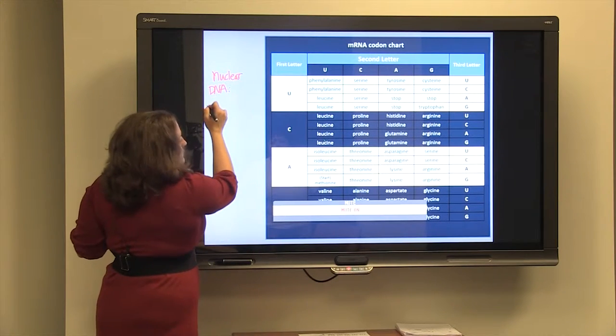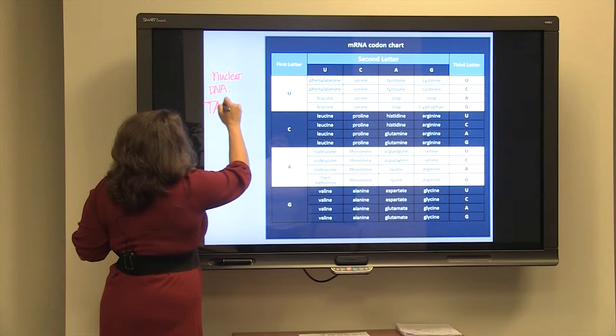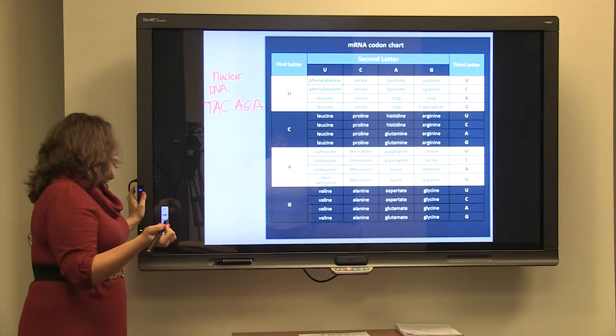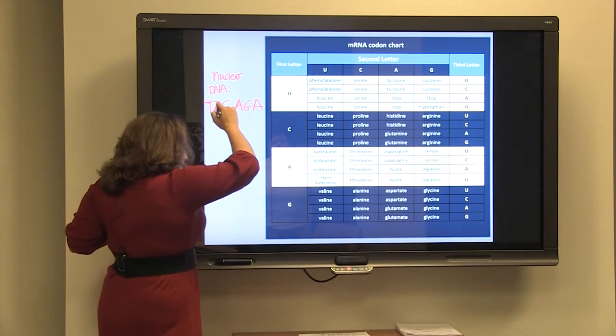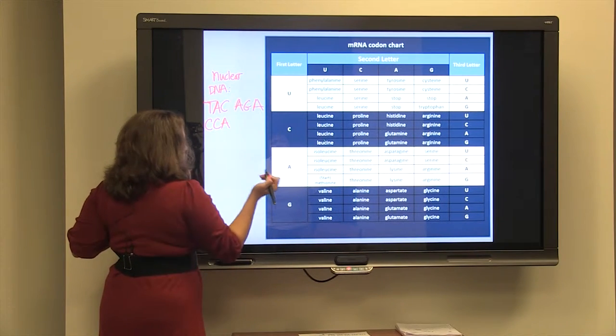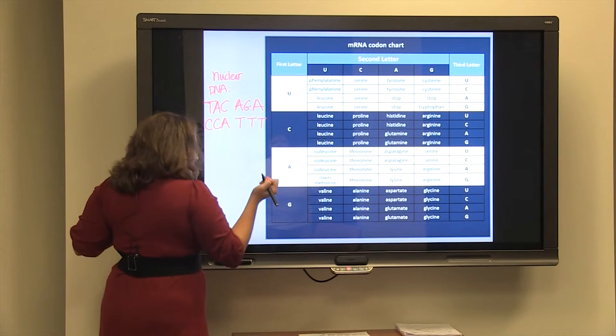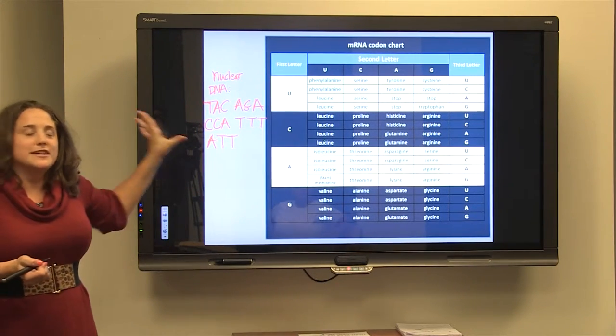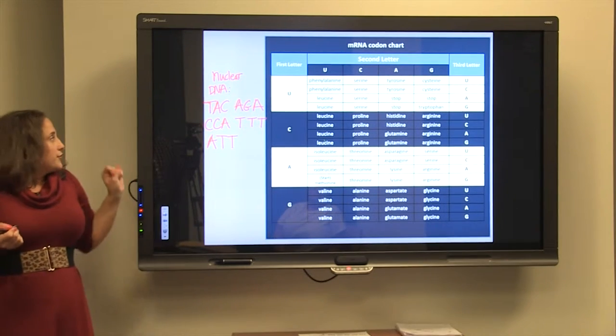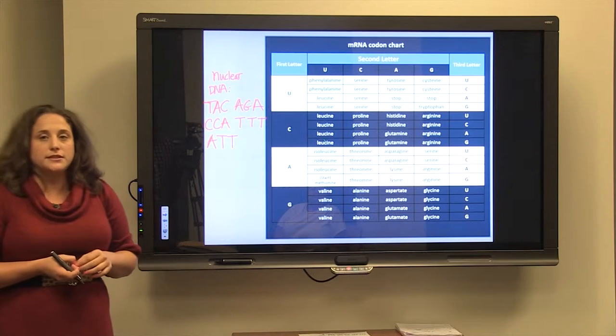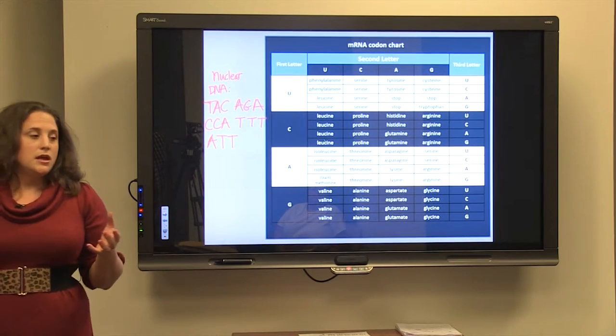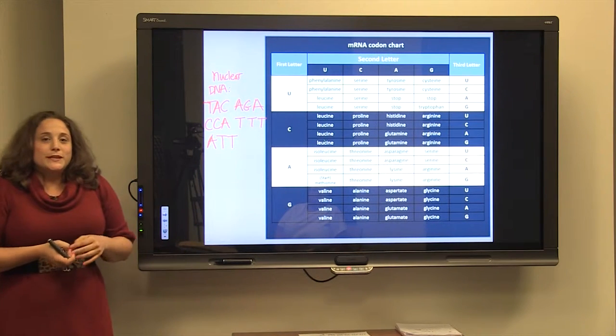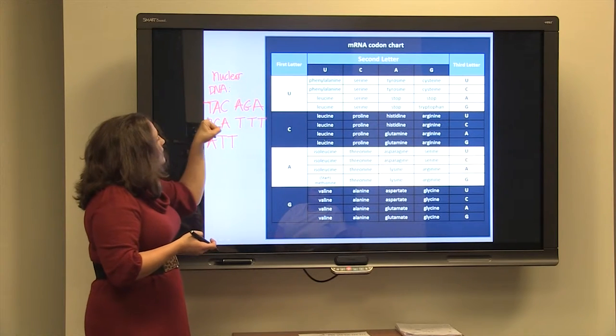So if your instructor gives you a DNA, a nuclear DNA sequence of TAC, AGA, CCA, TTT, and ATT. This is our example segment. It could be a thousand of these long, but we're just going to stop here. That's fifteen, three, five triplet codons of three. So, the mRNA is read in groups of three, called a codon. Three nitrogen bases, and everybody has slightly different ones. So, that's what leads to all the cool diversity around there. So, your nuclear DNA segment is as follows.